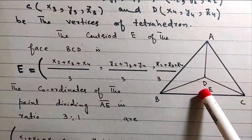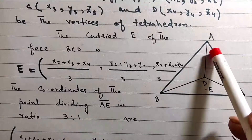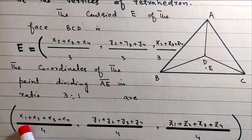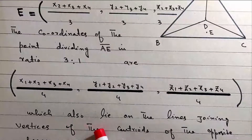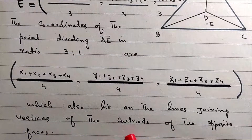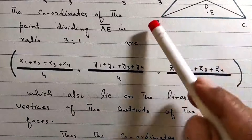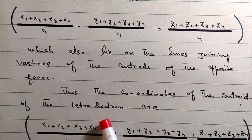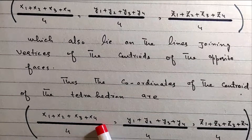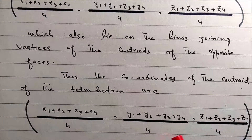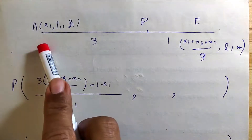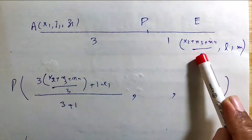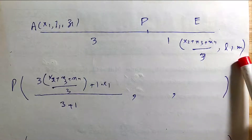The coordinate of the point dividing AE in ratio 3:1. We get: x1 plus x2 plus x3 plus x4 divided by 4, y1 plus y2 plus y3 plus y4 divided by 4, z1 plus z2 plus z3 plus z4 divided by 4. This point also lies on the line joining each vertex to the centroid of the opposite face, confirming the centroid of the tetrahedron.